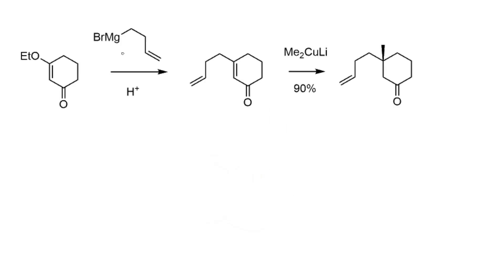The first step in the synthesis is the addition of a four-carbon Grignard reagent into the enol ether of cyclohexane-1,3-dione. One mistake you can make here is assuming this reaction is a conjugate addition followed by loss of ethoxide — you should think more carefully about the mechanism by which we get to this intermediate.